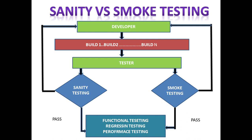In summary: in sanity testing you check the core functionality of a particular application and identify environmental issues. In smoke testing you test the critical functionality of the application. If both tests pass, you move on to further testing such as functional testing, regression testing, and performance testing. Once you receive a build as a tester, you perform sanity testing and smoke testing first.